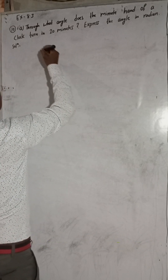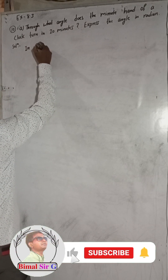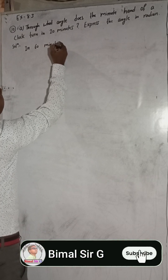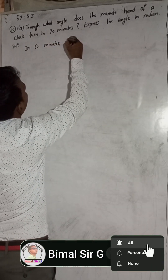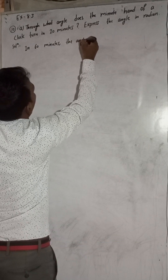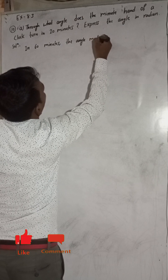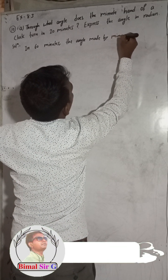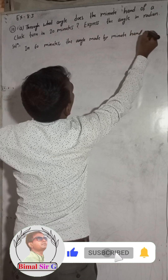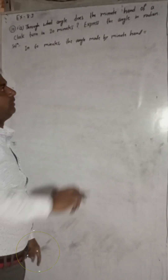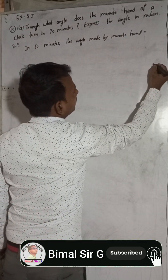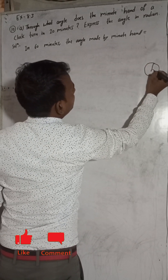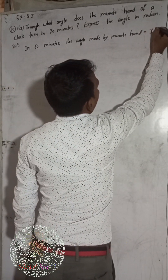For this we will have to write: in 60 minutes, the angle made by the minute hand is equal to — in 60 minutes the minute hand will make one complete rotation. Suppose it starts from here, so when it takes one complete rotation it will make 360 degrees. In 60 minutes it will make 360 degrees.